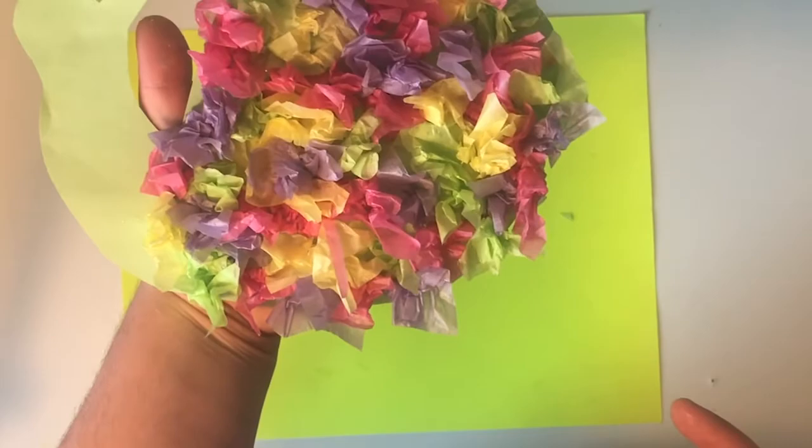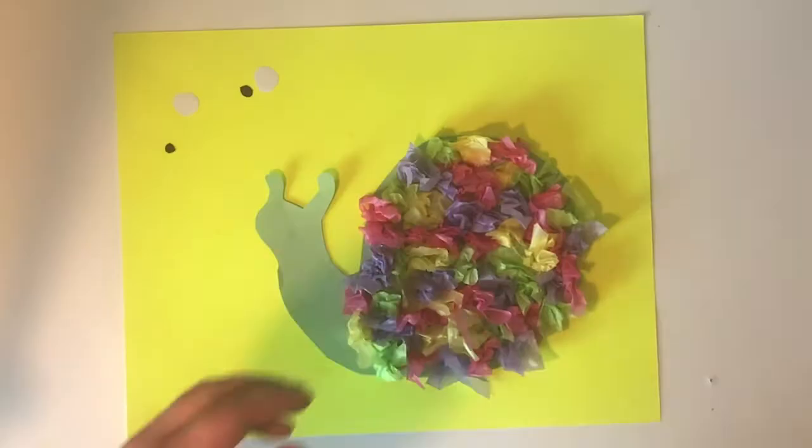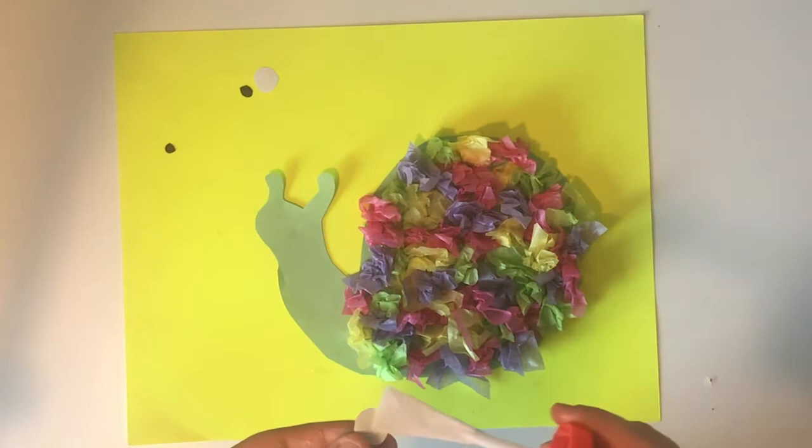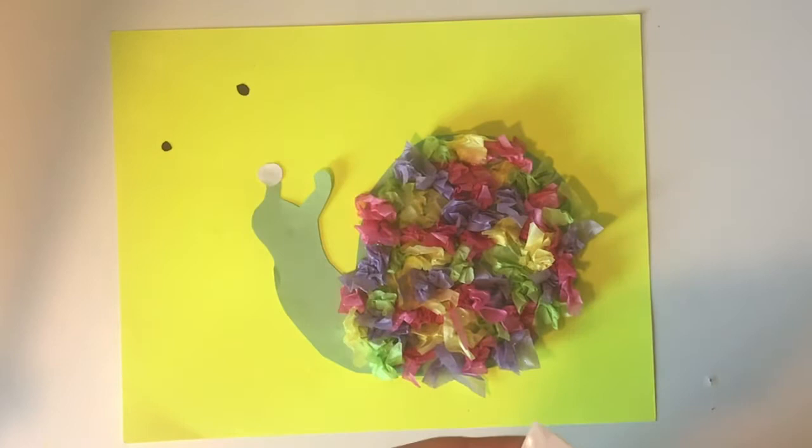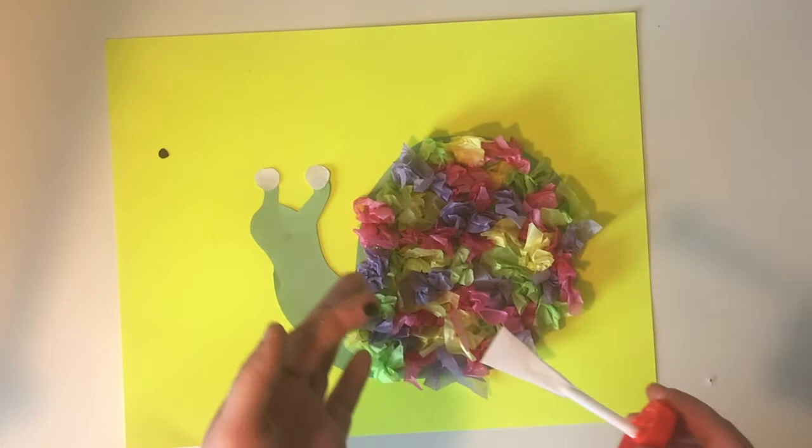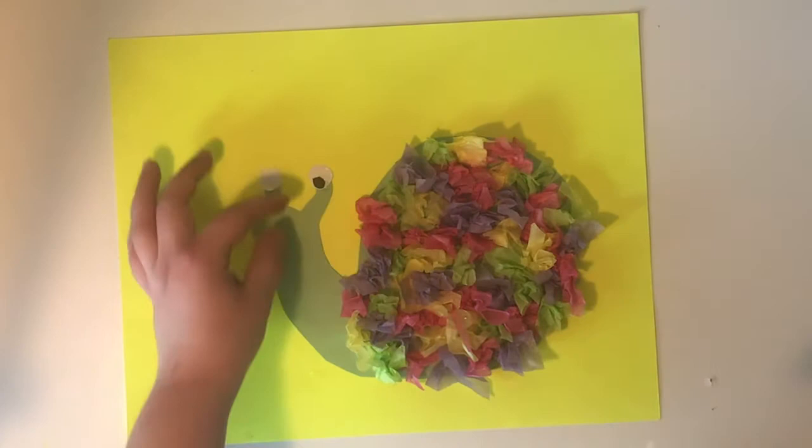And then next, we're just going to put the eyes on. So we're going to put some glue on the backs of these white circle pieces here, and just put them on the tops of these antennae. And then we're going to do the same with the black pieces and then just stick them to the white pieces. Just like that.